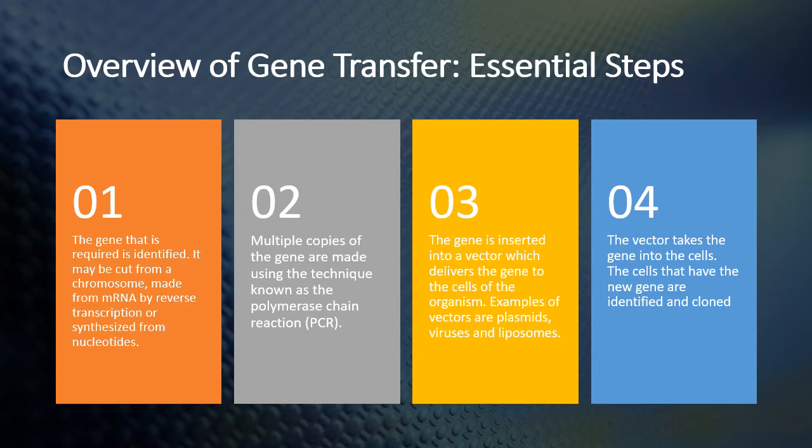Once you've amplified the DNA copies, you can then insert the gene into a vector. A vector is like a vehicle that helps to deliver the gene — whenever you want to take a gene from one organism to another, you use a vector to deliver it. You can't just throw the gene into the new organism because there's a chance it would not assimilate with the DNA of the new organism and would be wasted. Examples of vectors are things like plasmids, some viruses, and liposomes. The vector takes the gene into the cells and ensures the genes are expressed. You can then identify cells that have the new gene and clone them to make many more.